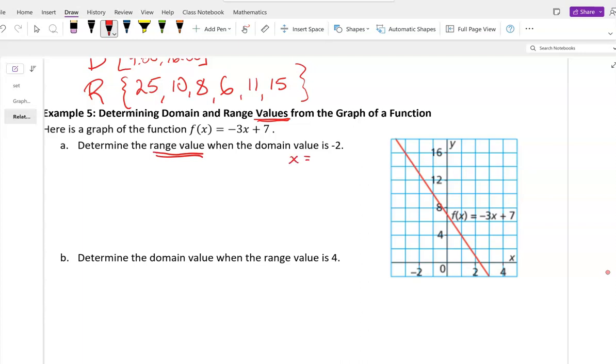So this is saying x is negative 2. So if I go to x is negative 2, and I go to the graph here, what am I ending up at? Looks to me like it's about 13. Let's say, y equals 13.